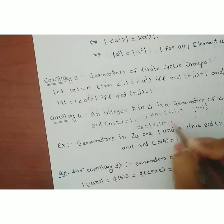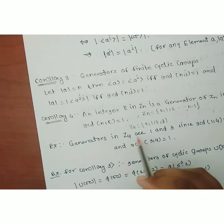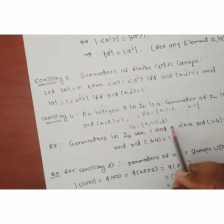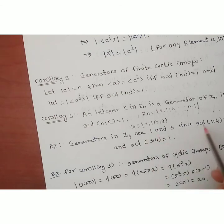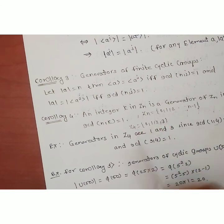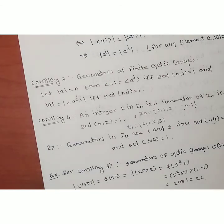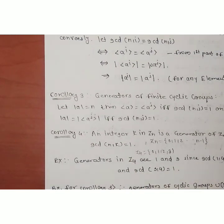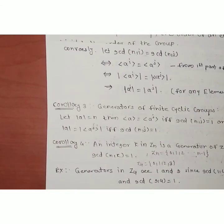For Z4: gcd(1, 4) = 1, so 1 is a generator. gcd(3, 4) = 1, so 3 is a generator. gcd(2, 4) = 2 ≠ 1, so 2 is not a generator. gcd(0, 4) = 4 ≠ 1, so 0 is not a generator. Therefore 1 and 3 are the only generators of Z4. The proof of this corollary is also not given in the book. The next part will be covered in the next lecture.